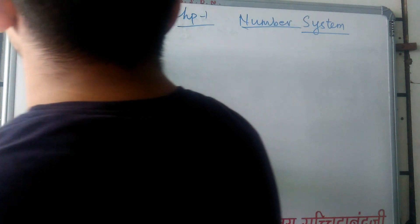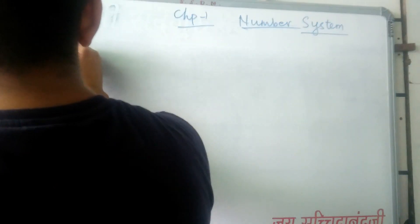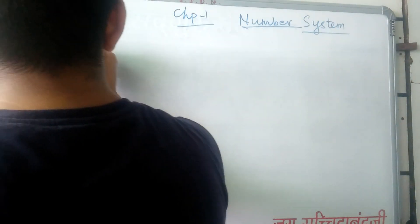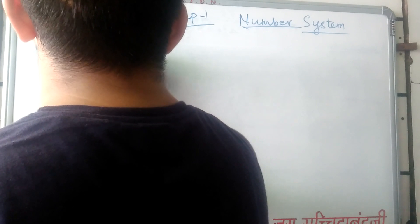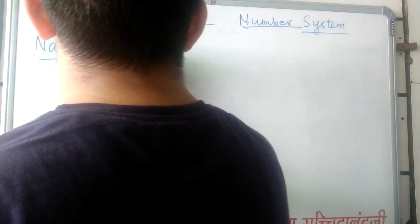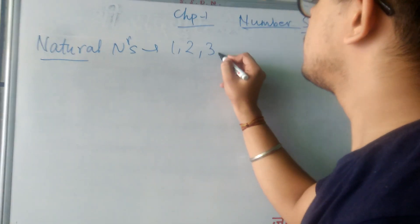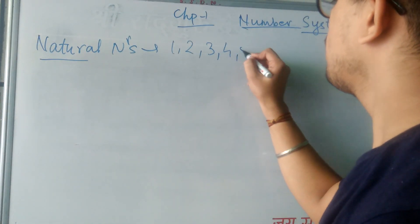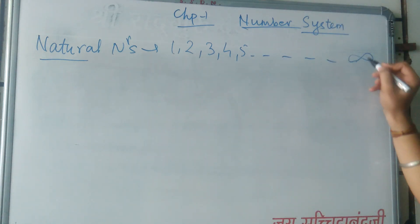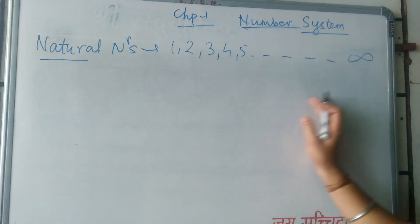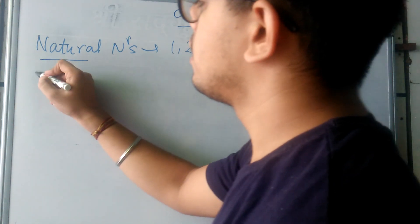What are natural numbers? All counting numbers from 1, 2, 3, 4, 5 till infinity are natural numbers.